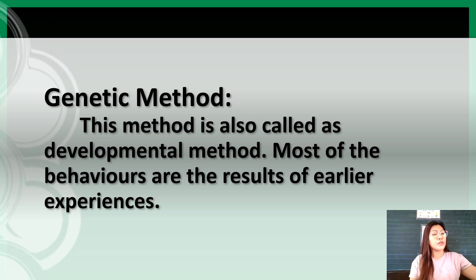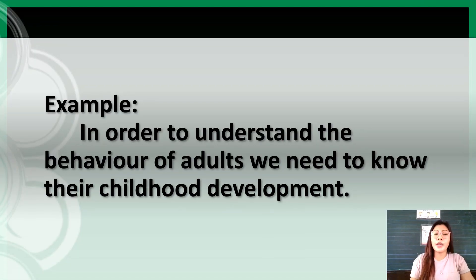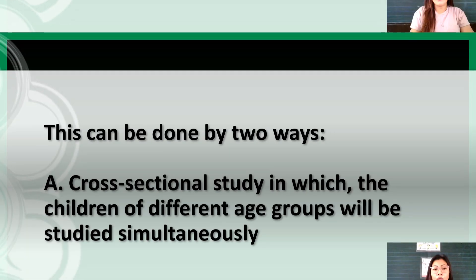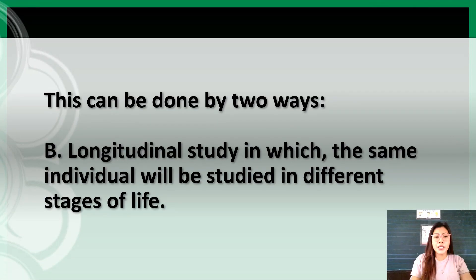Next, we come to the genetic method, also called the developmental method. Most behaviors are the results of earlier experiences. For example, in order to understand the behavior of adults, we need to know their childhood development. This can be done in two ways: A. Cross-sectional study, in which children of different age groups are studied simultaneously; and B. Longitudinal study, in which the same individual is studied in different stages of life.